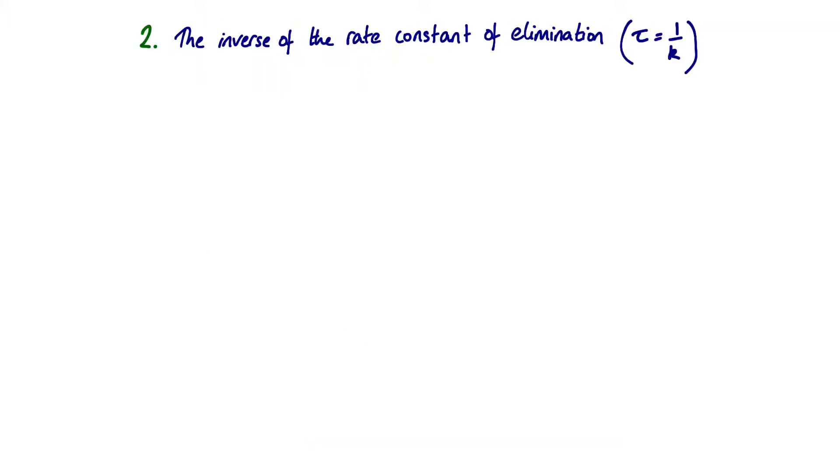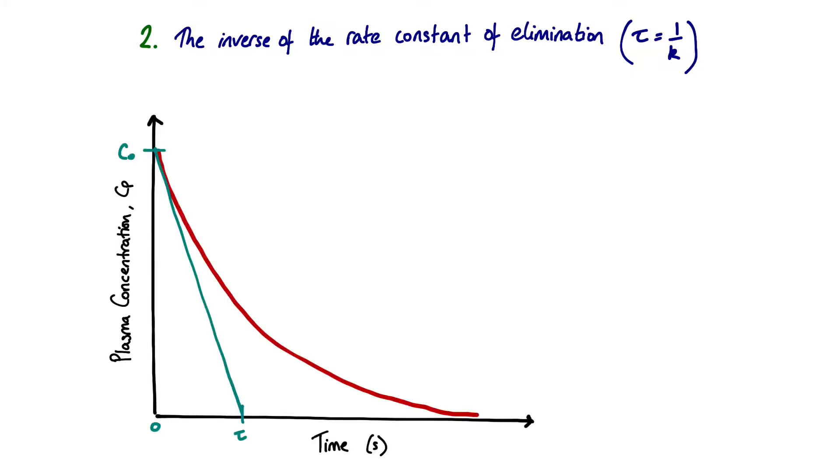Our second definition was that the time constant is the inverse of the rate constant of elimination, i.e. tau equals 1 over k. To understand where that comes from, we need to look at our graph and use differentiation. Our graph is plasma concentration against time. By definition, our time constant is the time it would take for the reaction to reach completion where the original rate to continue. The function of this curve is described by our equation. To find the rate of change at any point on a function or to find the gradient, we need to differentiate the original function. If we differentiate with respect to time, that's what this nomenclature means.